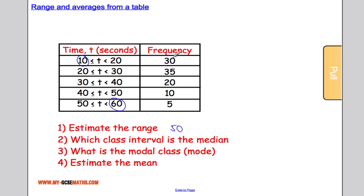The reason why it's an estimate is because the data is grouped. So we've got 30 pieces of data, but they can range anywhere between 10 and 20. So they could all actually be 19, and I wouldn't know. But that's why it's only an estimate of the range, because I'm using these class intervals to work it out.